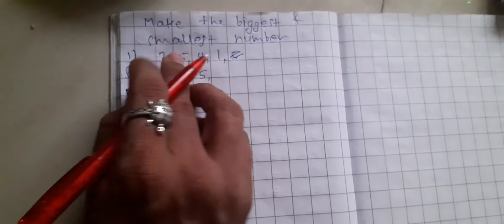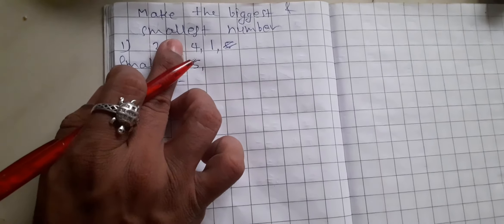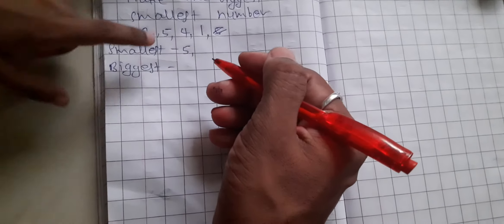After 5, which is the biggest number? After 5, which is the biggest number? 2, 4, 1. Which number is the biggest number? 4.